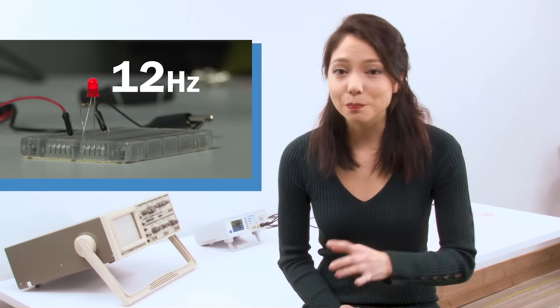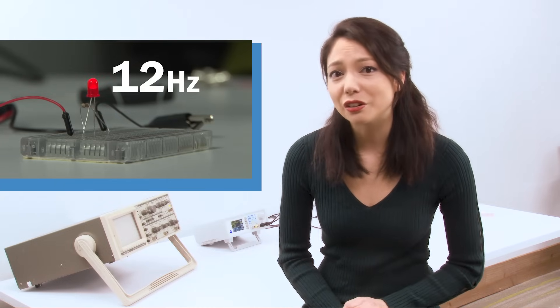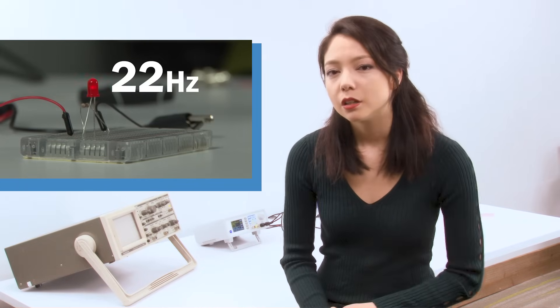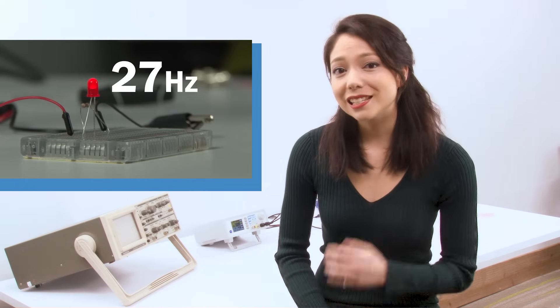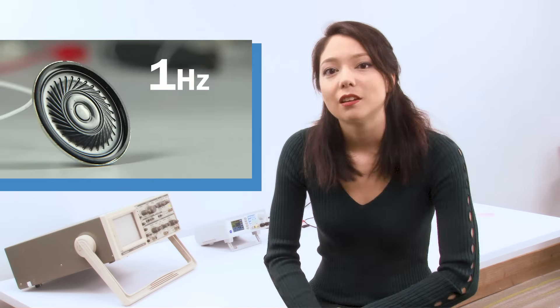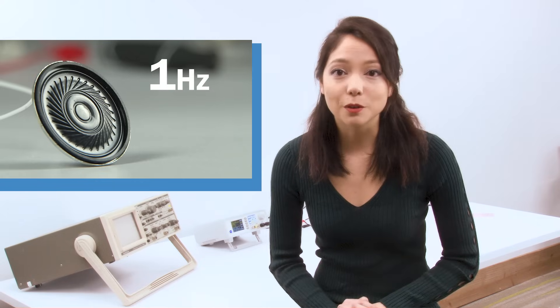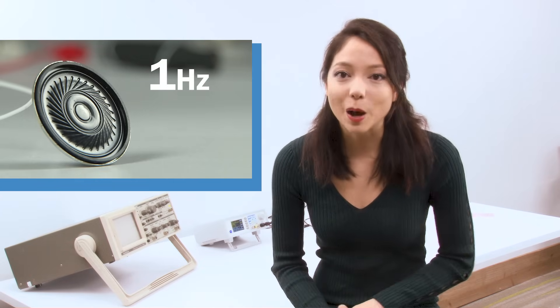Once we start turning our period down to the 0.1 second range and smaller though, it gets a lot harder. So let's switch to an output where we can still notice differences in periods and frequencies, a speaker. At one hertz, we only see the cone of the speaker moving at one time per second, making a pop.